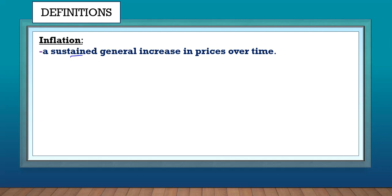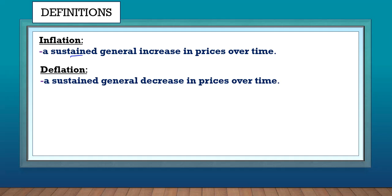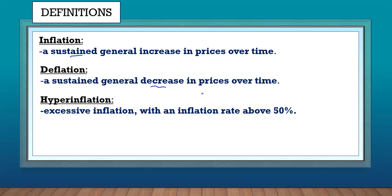Sustained just means that prices keep increasing over time. Deflation is just the opposite of inflation — a sustained general decrease in prices over time. Hyperinflation is excessive inflation, where the inflation rate is above 50%. Zimbabwe once experienced hyperinflation.